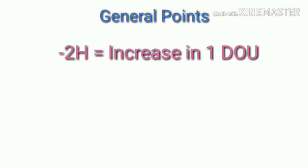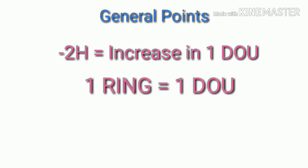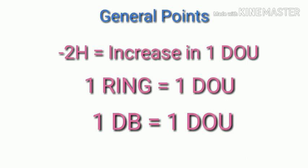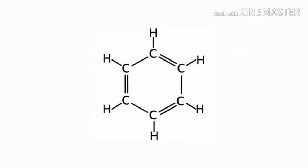General points about degree of unsaturation: every decrease of 2 hydrogens increases degree of unsaturation by 1. One ring contributes 1 degree of unsaturation, as seen in cyclobutane. One double bond contributes 1 degree of unsaturation. For benzene, there are 3 double bonds and 1 ring, giving a total of 4 degrees of unsaturation.